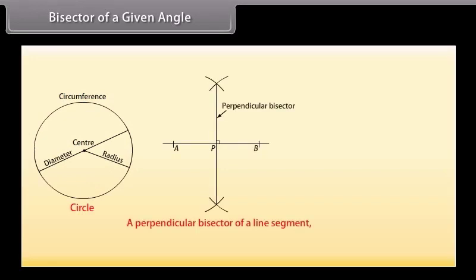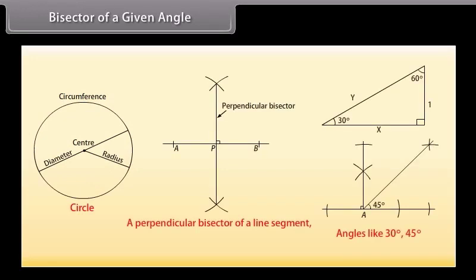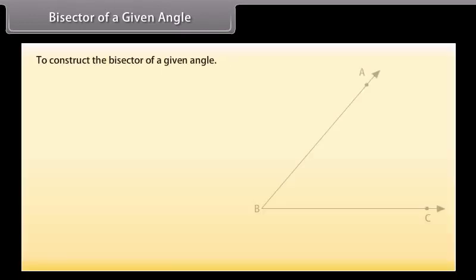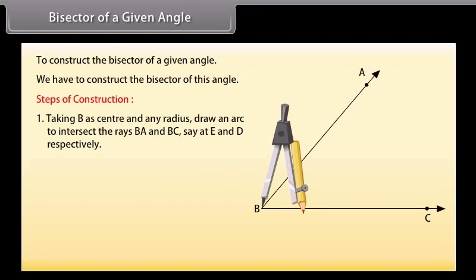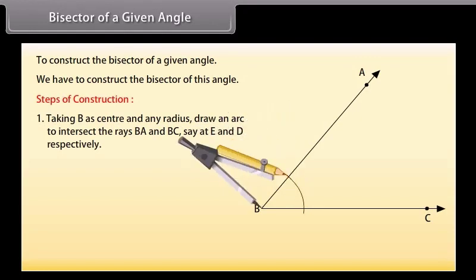Bisector of a given angle. Friends, we know how to construct a circle, a perpendicular bisector of a line segment, and angles like 30 degrees and 45 degrees. Now we will learn to construct the bisector of a given angle. Let us take an angle ABC. We have to construct the bisector of this angle. First of all, taking B as center and any radius, we will draw an arc to intersect the rays BA and BC, say at E and D respectively.